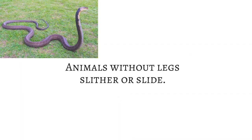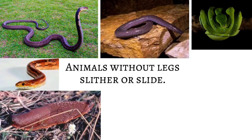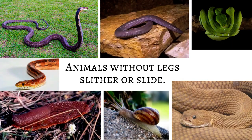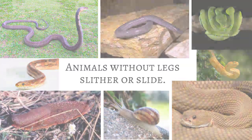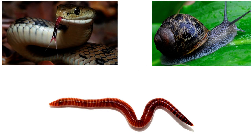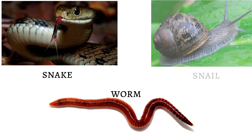How do animals without legs move? Animals without legs usually slither or slide on their bodies. Here are examples of such animals: snake, worm, and snail.